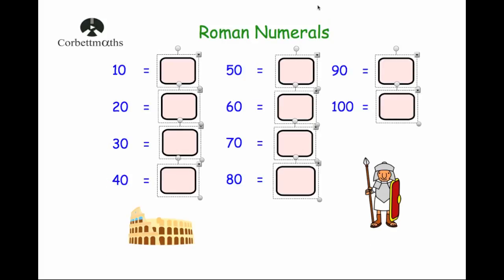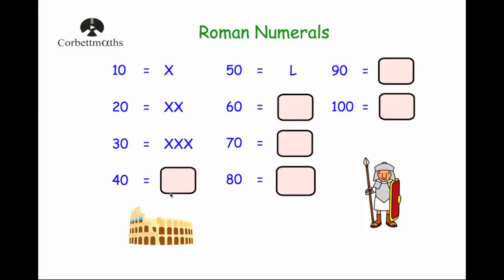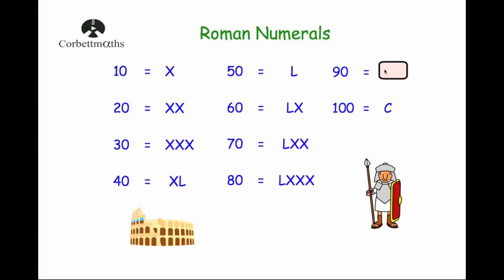Now let's look at the tens. X is ten, XX is twenty, XXX is thirty — just using X's rather than I's. Fifty is L. Forty is ten before fifty, so it's XL. Sixty is LX — a fifty and a ten. Seventy is LXX — fifty, ten and ten. Eighty is LXXX — fifty, ten, ten and ten. A hundred is C. And ninety is ten before a hundred, so that's XC.